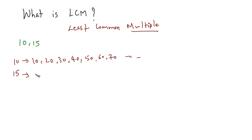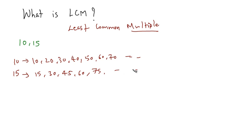And multiples of 15 are 15, 30, then we have 45, 60, 75, and so on.